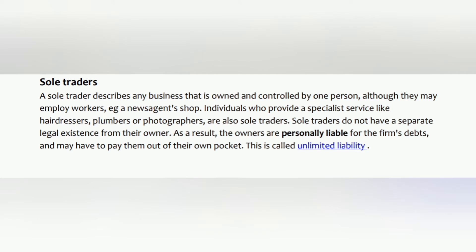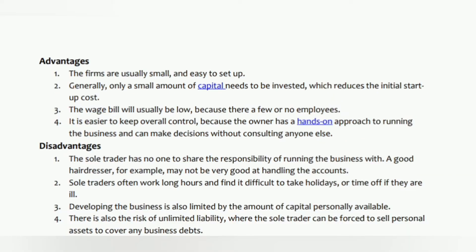Sole traders: a sole trader describes any business that is owned and controlled by one person, although they may employ workers, e.g. a newsagent's shop. Individuals who provide a specialist service, like hairdressers, plumbers, or photographers, are also sole traders. Sole traders do not have a separate legal existence from their owner; as a result, the owners are personally liable for the firm's debts and may have to pay them out of their own pocket. This is called unlimited liability.